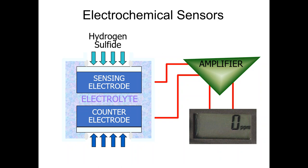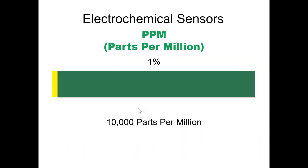Because the electrolyte is specific to a target gas, electrochemical sensors are gas-specific — unlike catalytic bead or IR sensors which can detect any combustible with reading adjustments, electrochemical sensors require the correct electrolyte for each specific gas. The other key difference is that instead of reading a percentage, electrochemical toxic sensors read in ppm — parts per million. This is because 1% by volume equals 10,000 ppm, and toxic gas limits occur at very low ppm ranges.